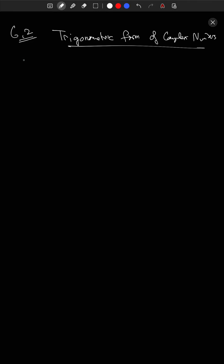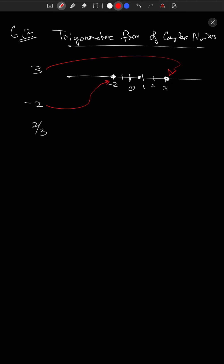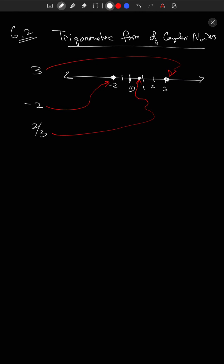The first thing we want to introduce in this section is visualization. For a regular real number, how do we visualize it? So how do we visualize the number 3? We draw a line, we draw 0 here, 1, 2, 3 — that's 3. How do we visualize minus 2? 1, 2 in this direction — that's minus 2. Two-thirds would be right there. So for real numbers, you can visualize them on the real line. You draw a line and then you plot the point where that number is.